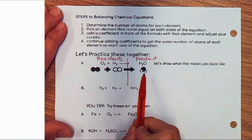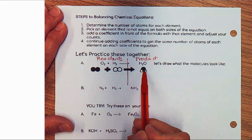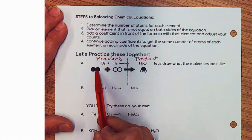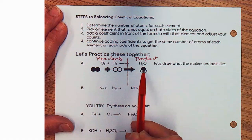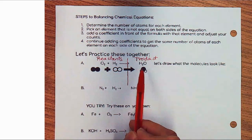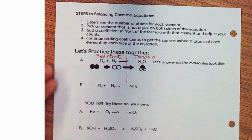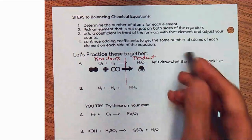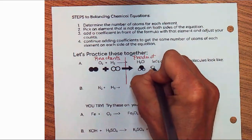By quickly looking at this, you can see the molecular structure here. We don't have enough black atoms, which represent oxygen, on the right side. We have to draw another water molecule on the right side.